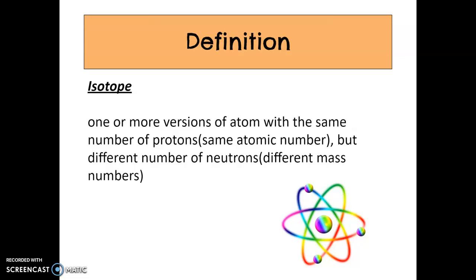Let's go back to our first lesson where we talked about the structure of the atom. Our nucleus is comprised of our protons, which are positive, and our neutrons, which are neutral. Together, those two subatomic particles make up the mass of the atom. The electron, which is negatively charged, doesn't have much mass, so we don't even consider it having mass at all. Therefore, the mass is our protons plus our neutrons.